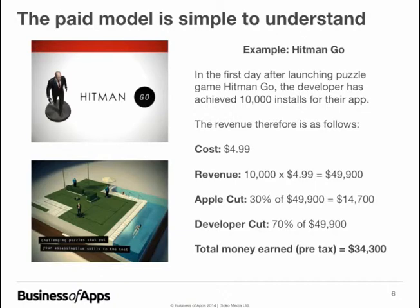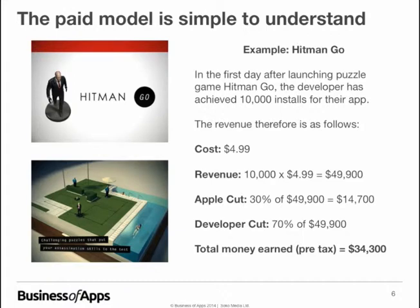Hitman Go, released by Square Enix, is a great example. On its first day of launch it achieved 10,000 installs at $4.99. That's $49,900 in gross revenue. Apple takes a 30% cut — worth $14,700 — so you take 70%, meaning on that first day you'd have made around $34,300. It's a simple calculation. The paid model is a simple investment: if someone buys it, you get the money without needing to worry about monetizing them afterwards.